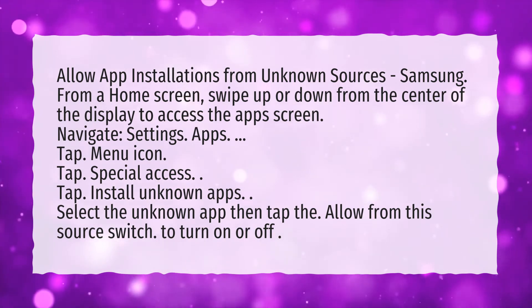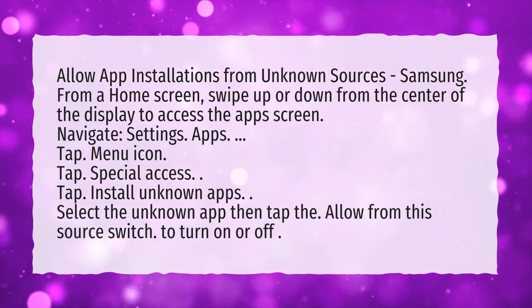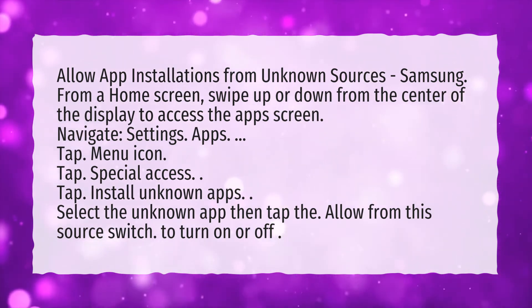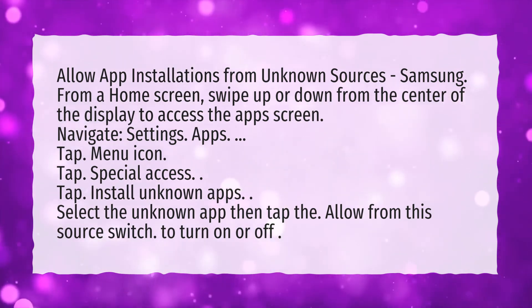Select the unknown app, then tap the Allow from this source switch to turn it on or off.